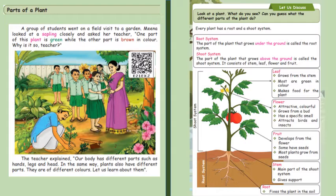The flower grows from the bud and has a specific smell and attracts birds and insects. Then we have fruit which develops from the flower. Some have seeds and most plants grow from the seed. The stem is the main part of the shoot system which gives support to the plant, and the root fixes the plant into the soil.